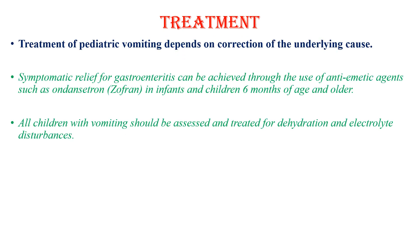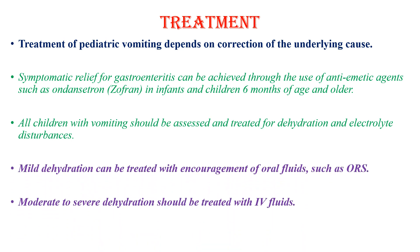Treatment of pediatric vomiting depends on correction of the underlying cause. Symptomatic relief for gastroenteritis can be achieved through the use of antiemetic agents in infants and children 6 months of age and older with ondansetron. All children with vomiting should be assessed and treated for dehydration and electrolyte disturbances. Mild dehydration can be treated with encouragement of oral fluids, and moderate to severe dehydration should be treated with IV fluids.